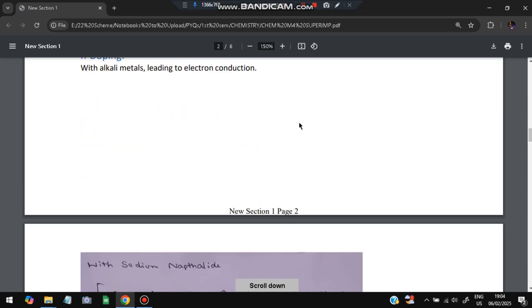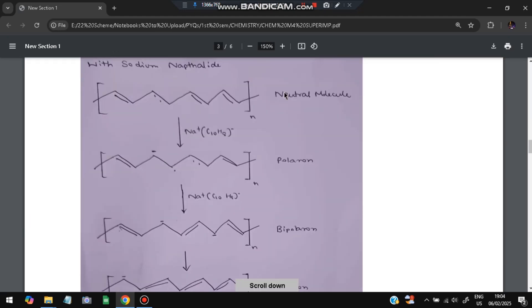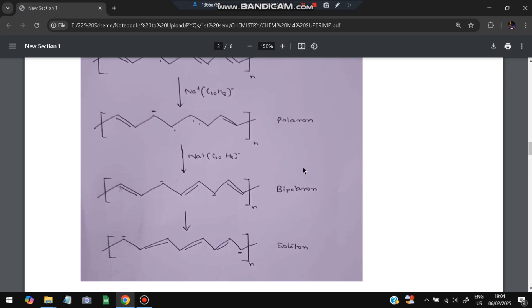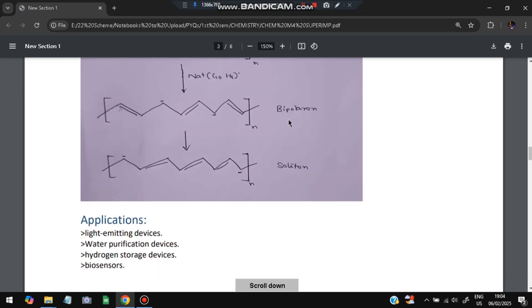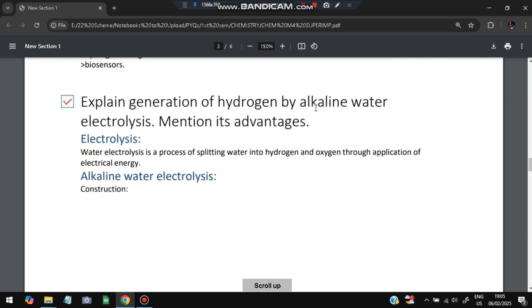Next is n doping with alkali metals leading to electron conduction. With sodium, this is a neutral molecule. If we add sodium to it, it becomes polaron then bipolaron and then soliton. So extra bonds get added if you observe it. This is the diagram you need to make for n doping. Applications include light emitting devices, water purification, hydrogen storage, and biosensors.